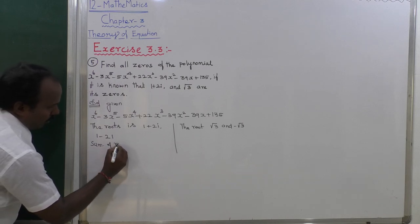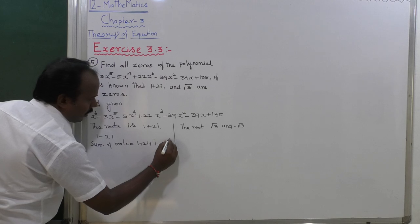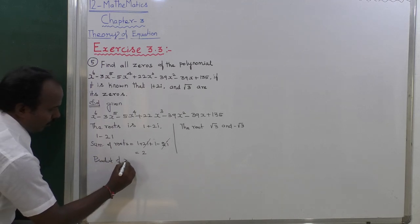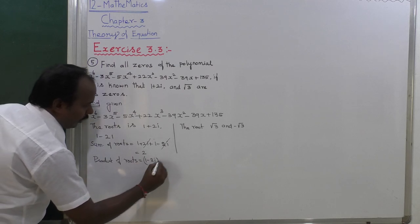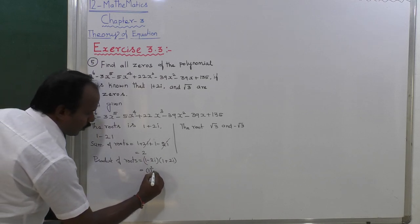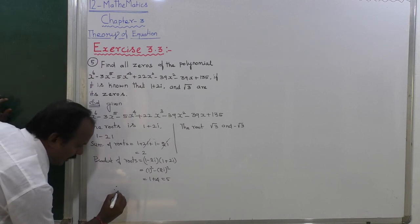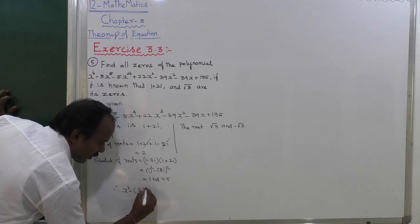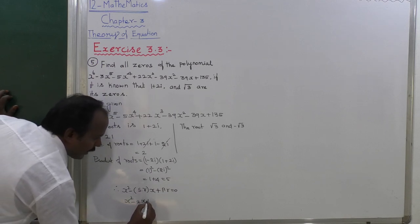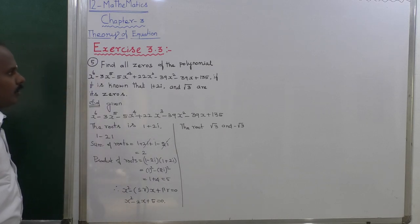Sum of roots of the first pair: 1 plus 2i plus 1 minus 2i — the 2i terms cancel — equals 2. Product of roots: 1 minus 2i into 1 plus 2i equals 1 squared minus 2i squared equals 1 plus 4 equals 5. Therefore the quadratic equation is x square minus 2x plus 5 equals 0. That is the first factor.